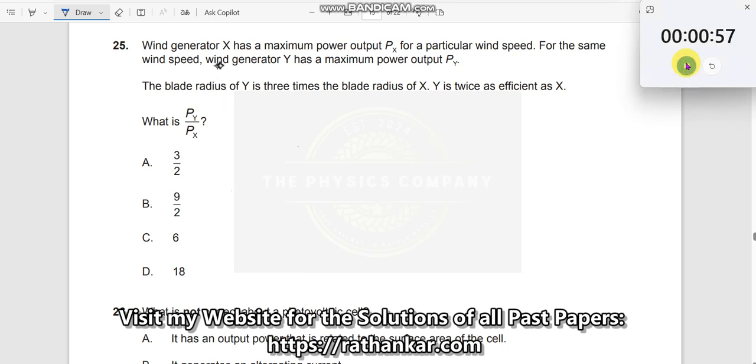Question number 25. Wind generator X has a maximum power output PX for a particular wind speed. First, what is the expression for wind output in a windmill? P equals one-half rho area into velocity cubed.